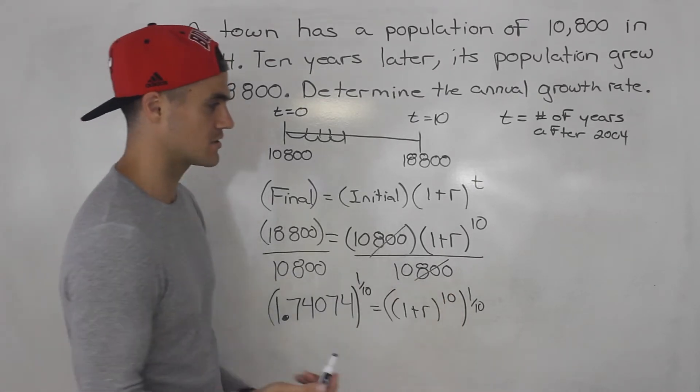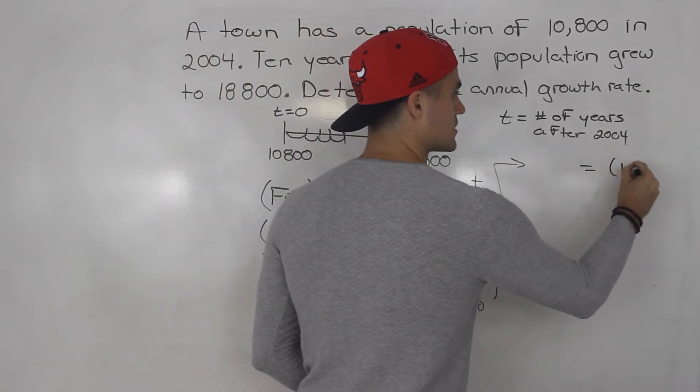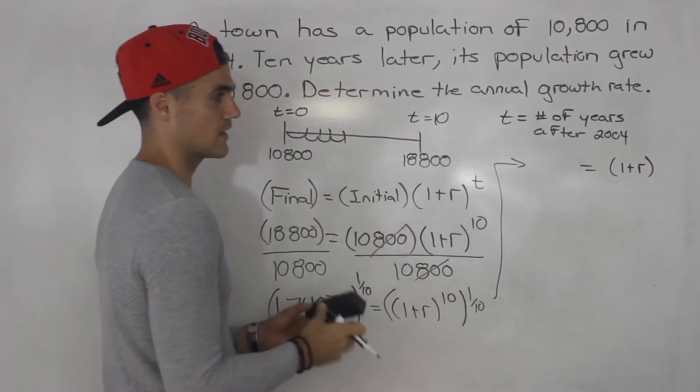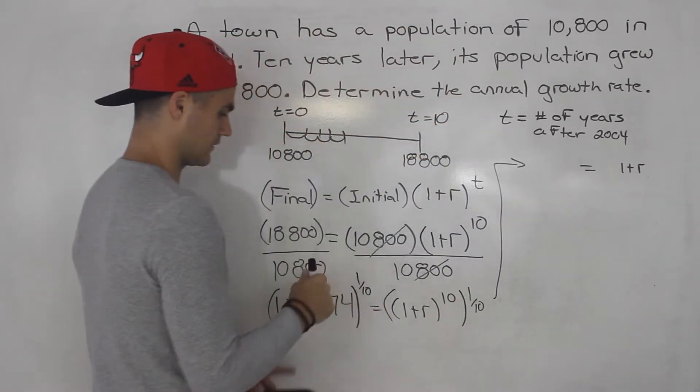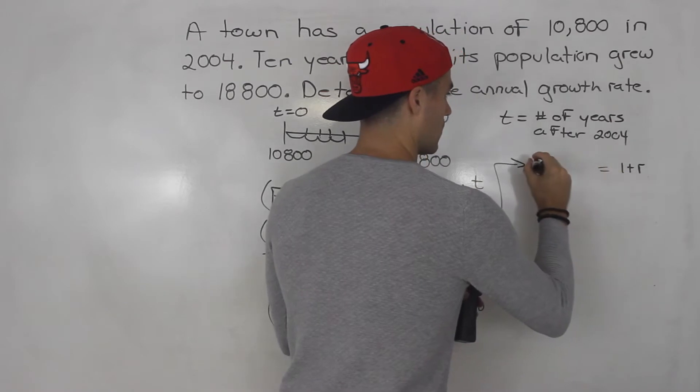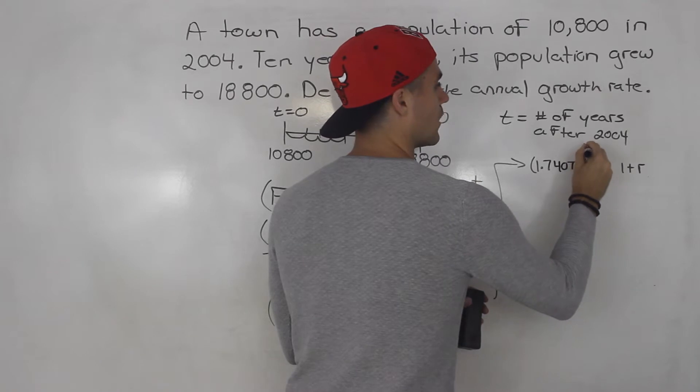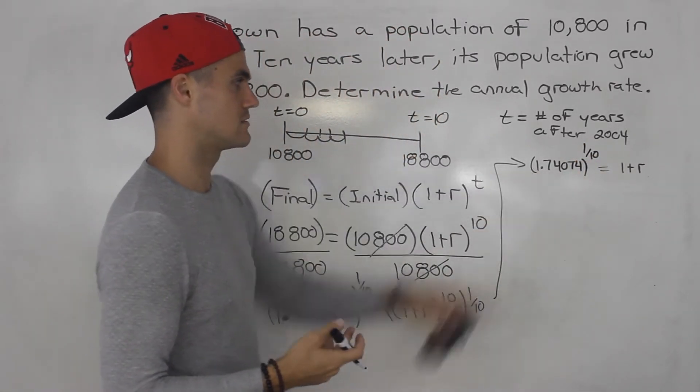So continuing this up here, we'd be left with 1 plus r on the right side. And then on the left side, we'd have this whole expression. So 1.74074 to the power of 1 over 10, or the 10th root of that number.